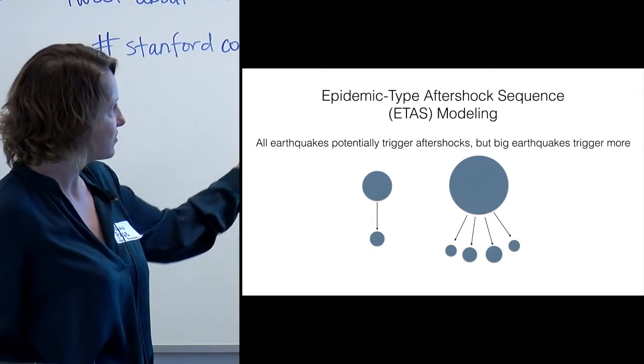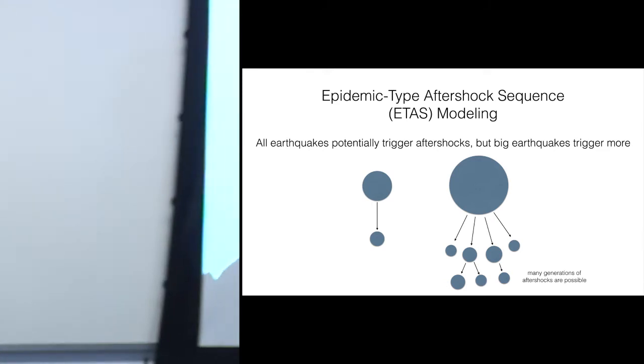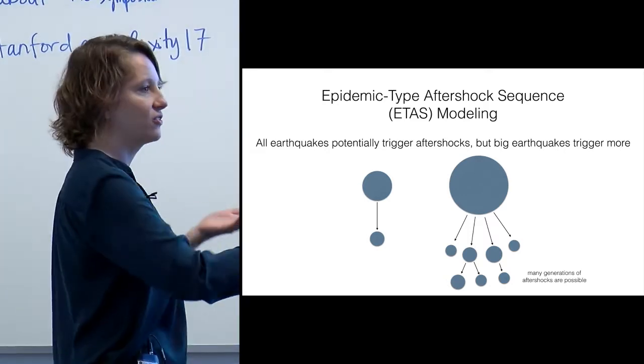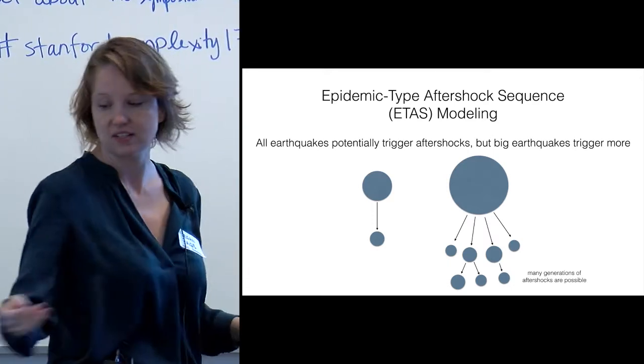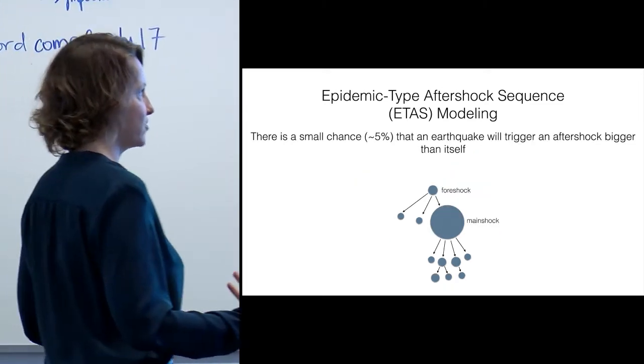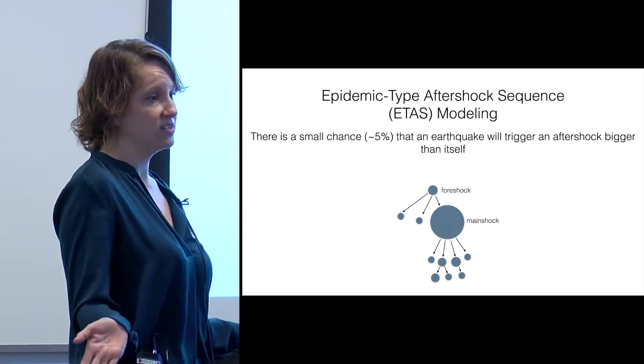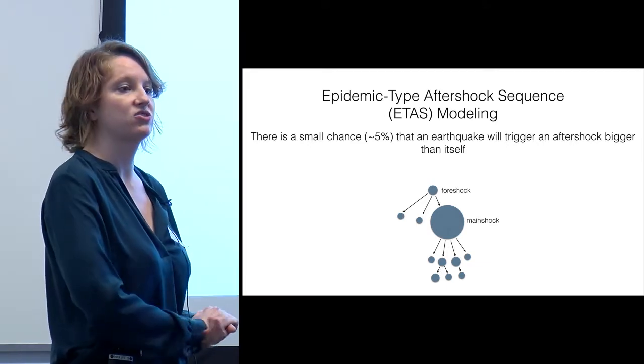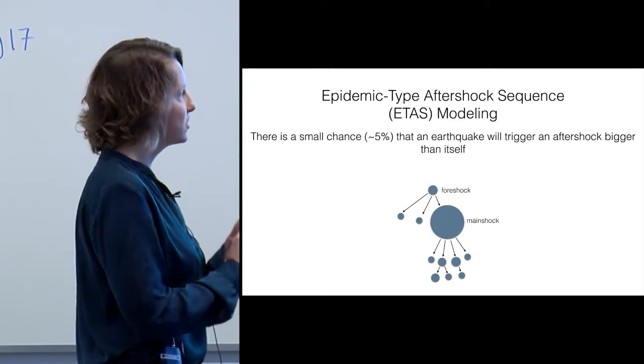So all earthquakes can trigger aftershocks. Big earthquakes trigger more. When we run these aftershocks, we do multiple generations. So that earthquake can trigger more, each of those earthquakes can have its own daughter quakes, and so on and so forth. You can go 10 generations out until finally, just stochastically, you have an earthquake that doesn't trigger something. There's a small chance that any earthquake can trigger an aftershock bigger than itself. It's typically about five percent, and that's independent of the main shock magnitude.